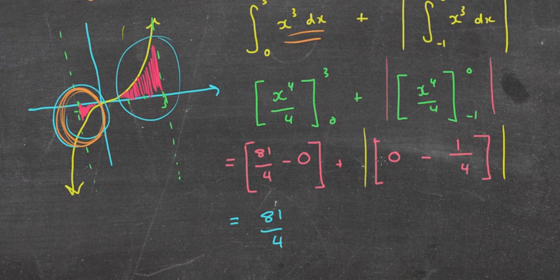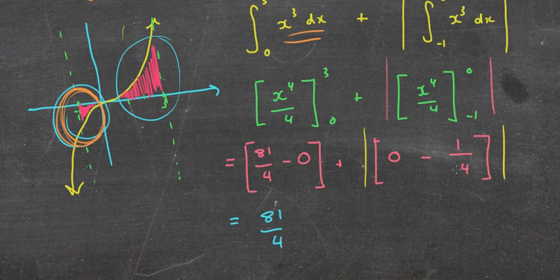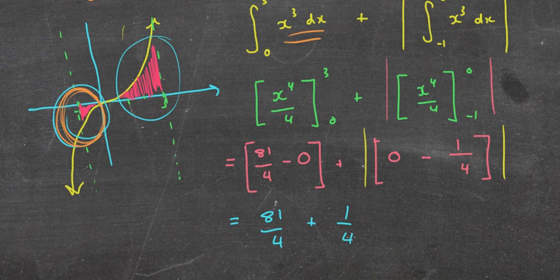Which will give me, I'm running out of room here, 81/4. Now you can see why the absolute value is important, because if I didn't have the absolute value, I'd be taking away a quarter. We don't want to do that. We want to add it on. So we're adding on that quarter. Which gives us 82/4, which is going to give us 20.5 units squared.